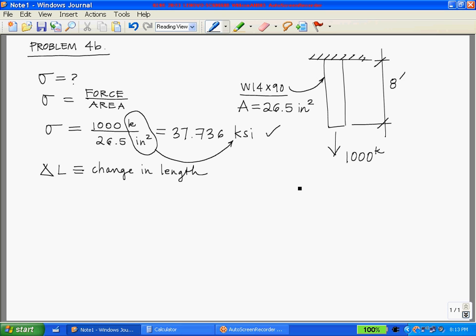We know that the definition of strain is the change in length over the original length, stress equals force per area which we already used, and we also know the relationship between stress and strain. They're related by the modulus of elasticity, and for steel that's 29,000 ksi.